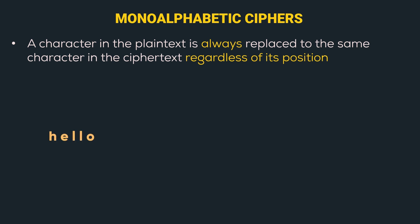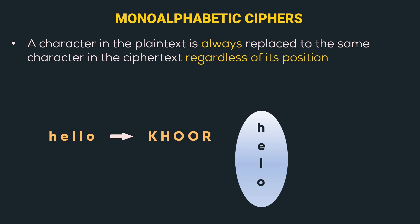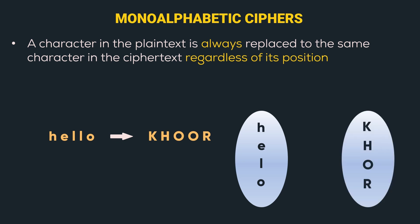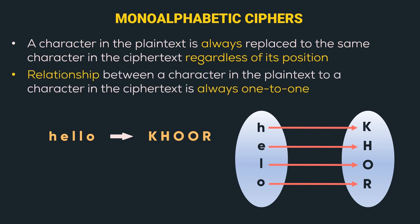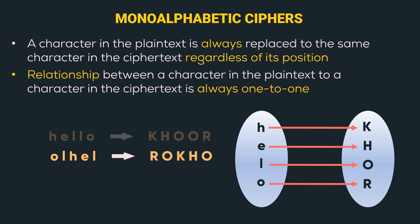In a monoalphabetic cipher, a character in the plaintext is always replaced by the same character in the ciphertext, regardless of its position. Consider the plaintext 'hello', which is converted to the following ciphertext. Let's visualize the mapping: 'h' is mapped to 'K', 'e' is mapped to 'H', 'l' is mapped to 'O', and 'o' is mapped to 'R'. Each character in the plaintext is mapped to a single character in the ciphertext — the relationship is always one-to-one and independent of position. So if we shuffle the plaintext, the same mapping is applied to convert it to ciphertext.